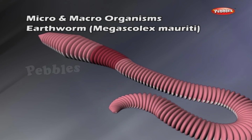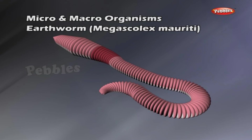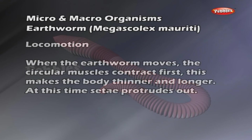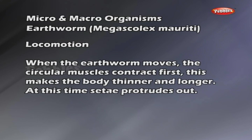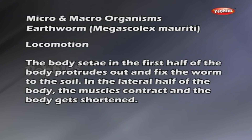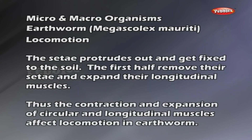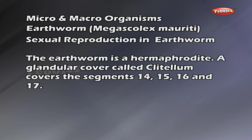Nephridia are excretory organs present in each segment in pairs. The earthworm is made up of 100 to 120 segments. The organs of movement are called setae. The circular and longitudinal muscles help in locomotion. When the earthworm moves, the circular muscles contract first, making the body thinner and longer. At this time, the setae protrude out. The setae in the first half of the body fix the worm to the soil. In the latter half, the muscles contract and the body gets shortened. The first half removes the setae and expands the longitudinal muscles — contraction and expansion of these muscles affect locomotion.